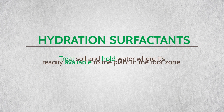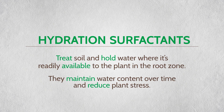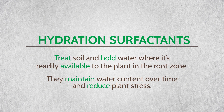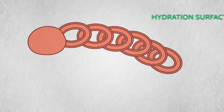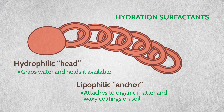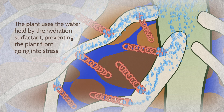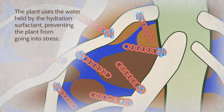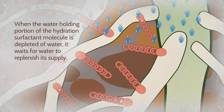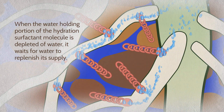Hydration surfactants treat the soil and hold water where it's readily available to the plant in the root zone. They maintain water content over time and reduce plant stress. Hydration surfactants have more lipophilic anchor that attaches to organic matter and the waxy coatings on soil particles, and a smaller hydrophilic head, which holds water available to the plant over time. The plant easily uses the water held by the hydration surfactant, preventing the plant from going into stress. When the water-holding portion of the hydration surfactant molecule is depleted of water, it waits for rain or irrigation water to replenish its supply.